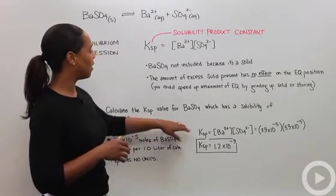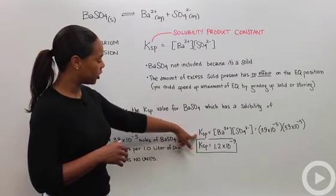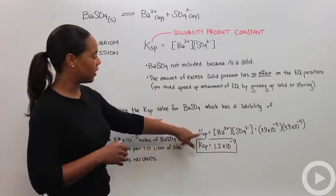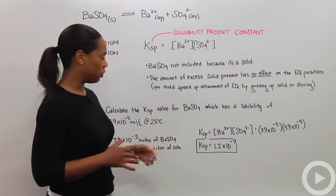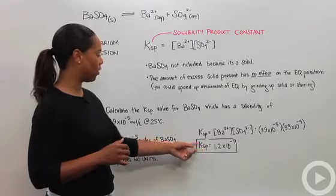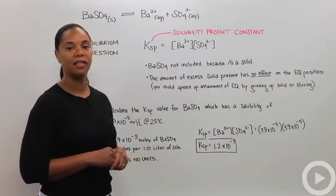We can plug that into our equilibrium expression. KSP equals (3.9×10⁻⁵)², which gives us a KSP value of 1.2×10⁻⁹.